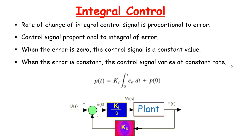The integral equation is: p(t) = Ki × ∫₀ᵗ ep(t) dt + p(0), where p(0) is the controller output when the integral action starts. The gain Ki expresses how much controller output is needed for every percent-time accumulation of error.